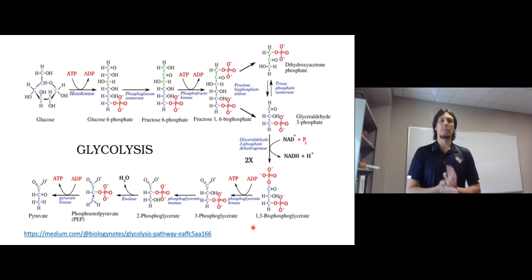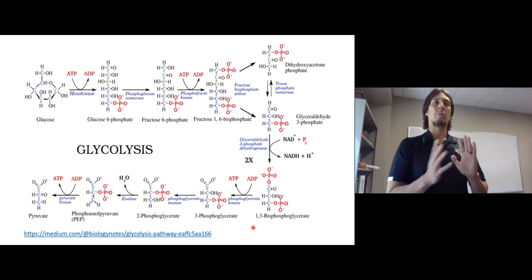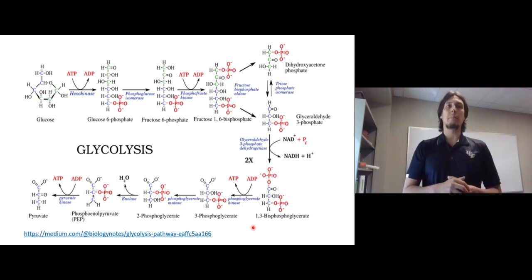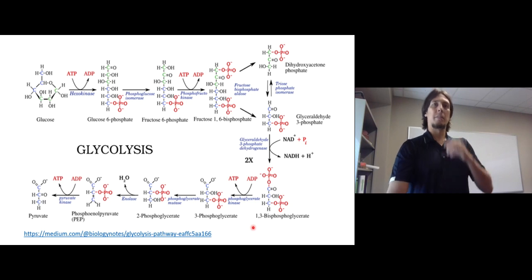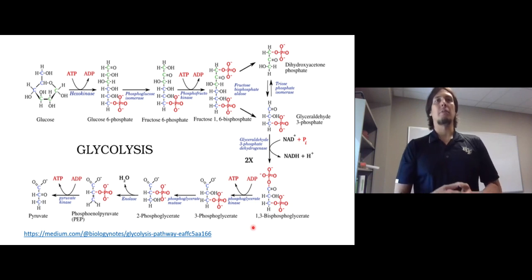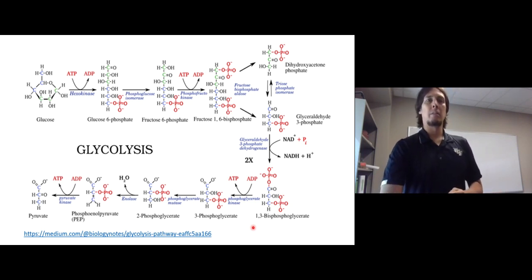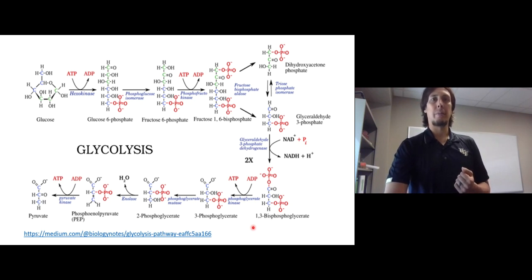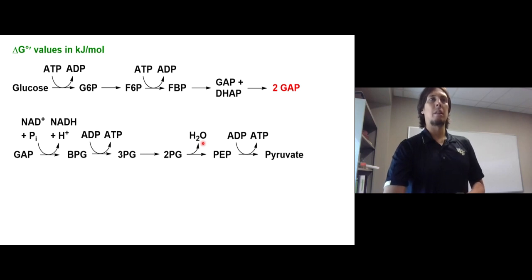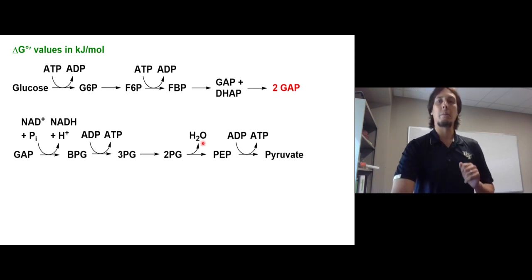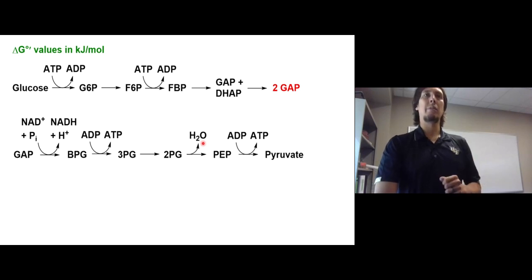Now let's see how we can use this to our advantage using the glycolysis pathway. This is a 10-step pathway for the breakdown of glucose to pyruvate. Schematically, glucose is converted to two molecules of GAP at the top, and then each molecule of GAP is converted to pyruvate — it's important to remember that stoichiometry.